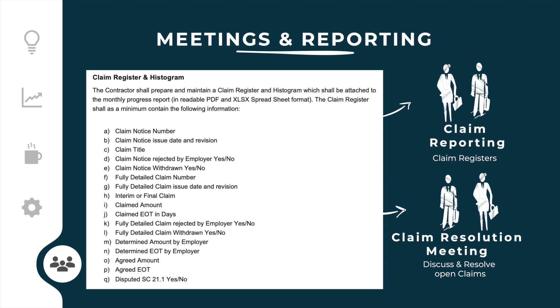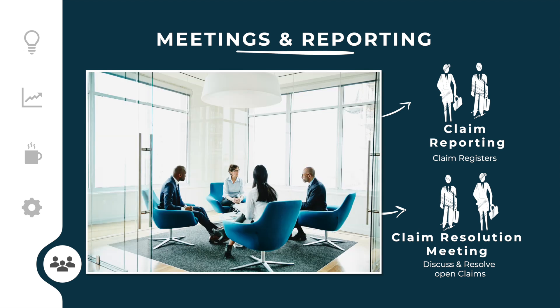The administration requirements shall specify what the reporting requirements and frequency of reporting are. Normally a claims register is prepared, which shall clearly show the status of the claim resolution process. The report can be submitted in various formats or can be generated by the applicable contract management system. The administration requirements shall also specify claim resolution meetings, which shall be held on a regular basis between the parties in order to discuss, clarify, negotiate, and agree the claims. If no resolution can be achieved, then the dispute resolution provisions of the contract shall be followed.